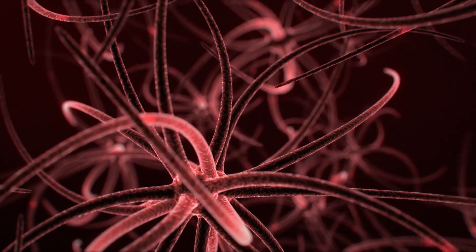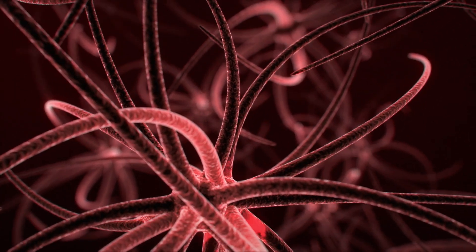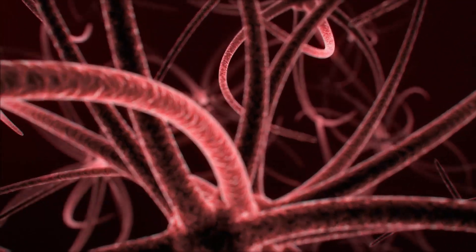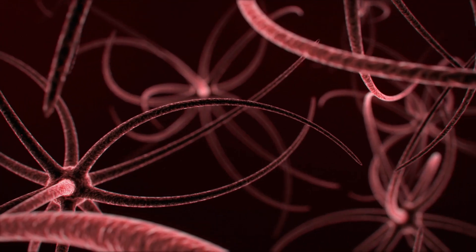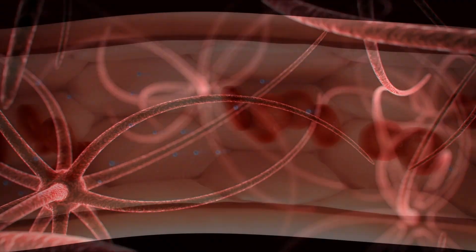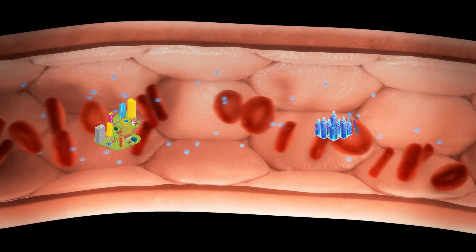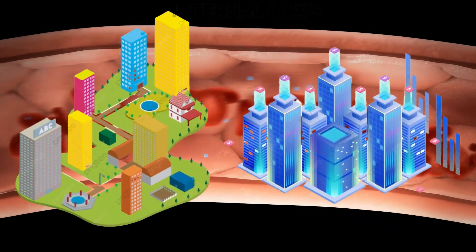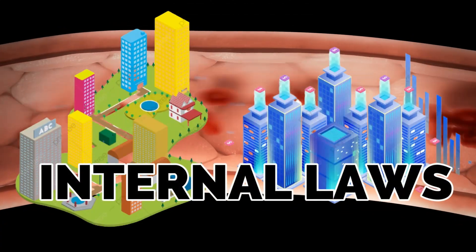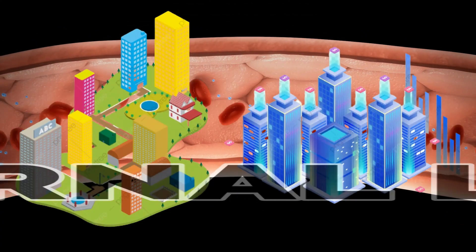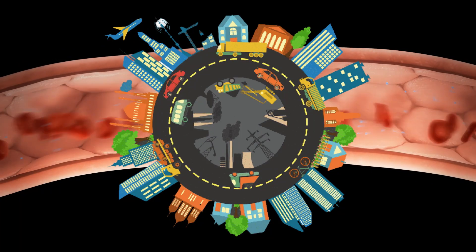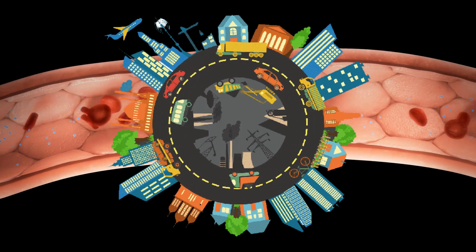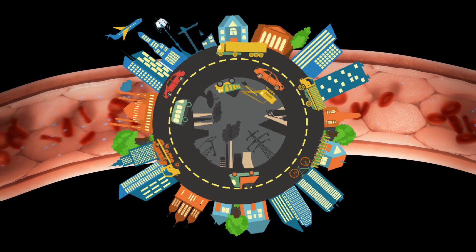The virus faces a significant challenge: because neurons are so lengthy, it can be difficult for the virus to reach the cellular machinery and take over the cell. If you think about it, our cells are a lot like little city-states. They have their internal laws and systems that keep things running smoothly, and just like any city, they need excellent infrastructure to function correctly.